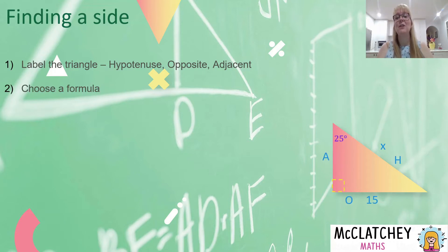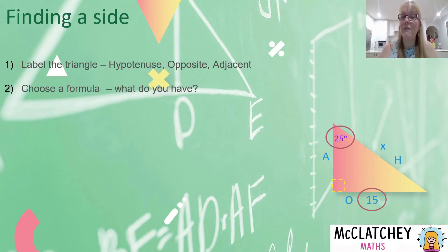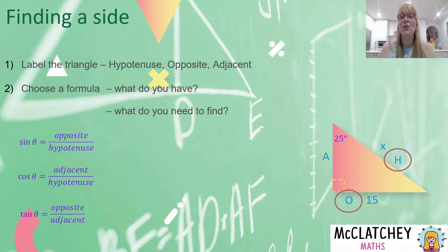Our second step is to choose an appropriate formula. We look at the information that's been provided: we've got an angle, which tells us which sides to use for our trigonometric ratio. We can see we've been given information about the opposite side. We also need to look at what we need to find — the unknown side, which is our hypotenuse. Based on what we have and what we need, we select a formula using O and H — that is our sine formula.